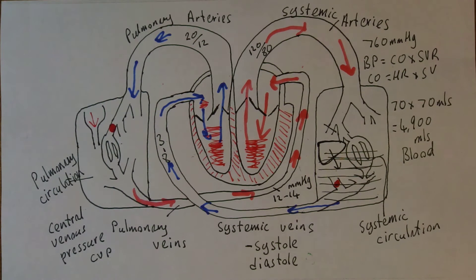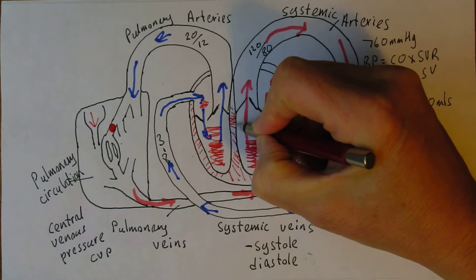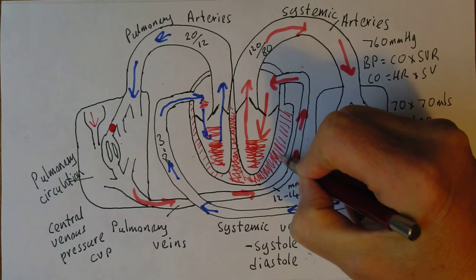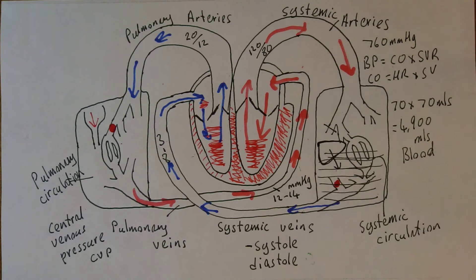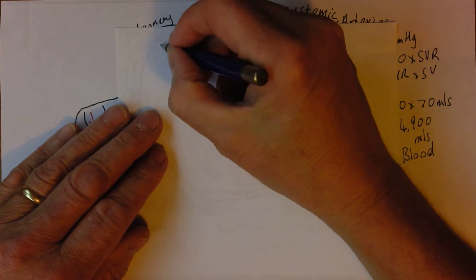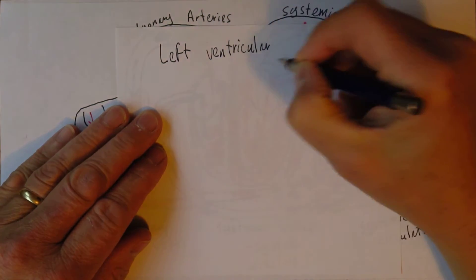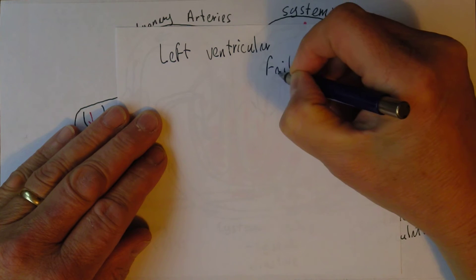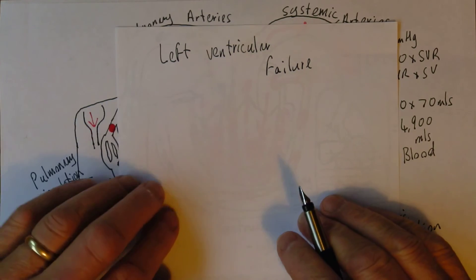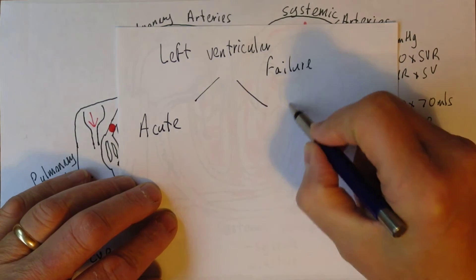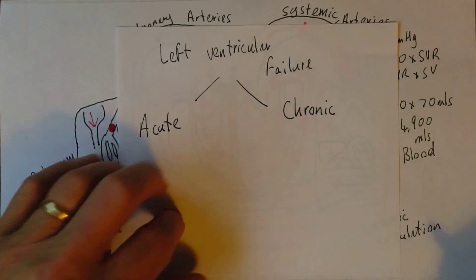As would failure of the left ventricular myocardium. Here we have the left ventricular myocardium. Thick myocardial tissue. And this can fail causing left ventricular failure. And as with many conditions as we've seen it can be acute or it can be chronic.